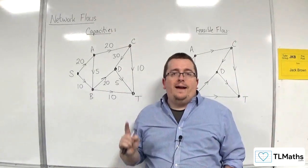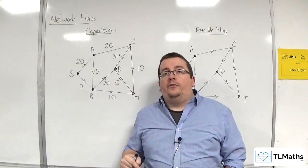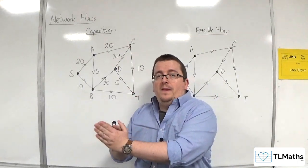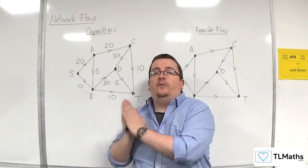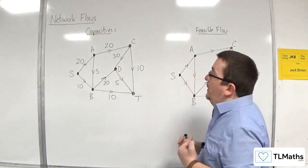Also, you can't have the flow in not being the same as the flow out. The flow into a node has got to be exactly the same as the flow going out of the node when we're doing the feasible flow.